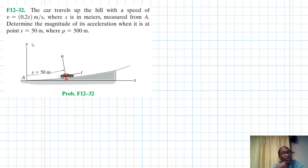Hello, I welcome you all to this screencast. The problem reads that the car travels up the hill with a speed of v equal to 0.2s, where s is in meters measured from A. Determine the magnitude of its acceleration when it is at point s equal to 50 meters where ρ equal to 500 meters.